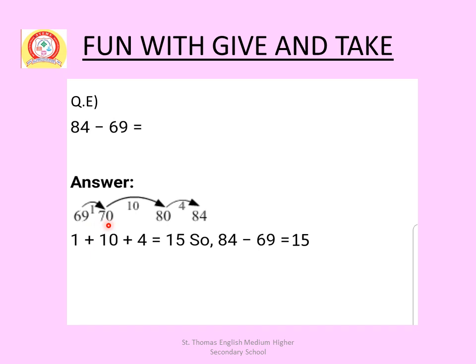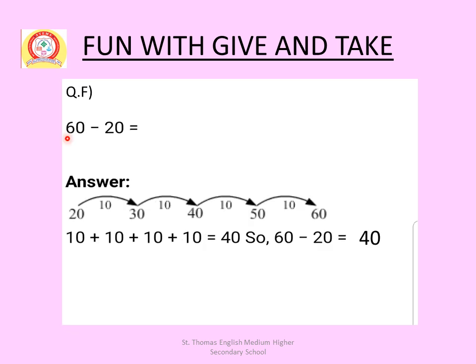Next: 84 minus 69. From 69, start forward counting to 84. From 69 to 70 in 1 step, 70 to 80 in 10 steps, 80 to 84 in 4 steps. So 1 plus 10 plus 4 equals 15. Therefore 84 minus 69 equals 15.